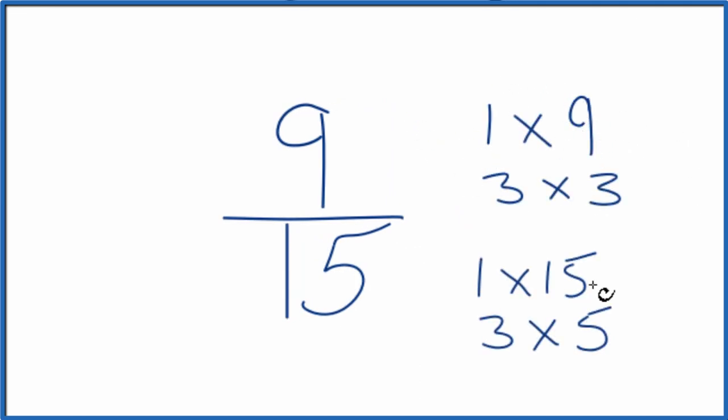So when I look at the factors for 9 and 15, the only common factor, the greatest common factor, that's going to be 3.